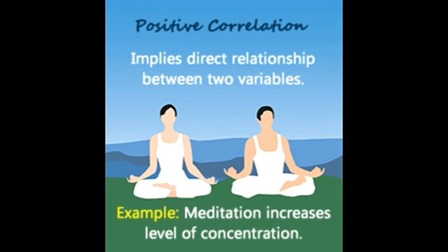Correlation studies the relationship between two variables, and its coefficient can range from minus 1 to 1. A positively inclining relationship is positive correlation, whose value can range from 0 to 1. Positive correlation implies that when the value of one variable increases, the value of the other also increases, and the opposite happens when the value of one variable decreases.